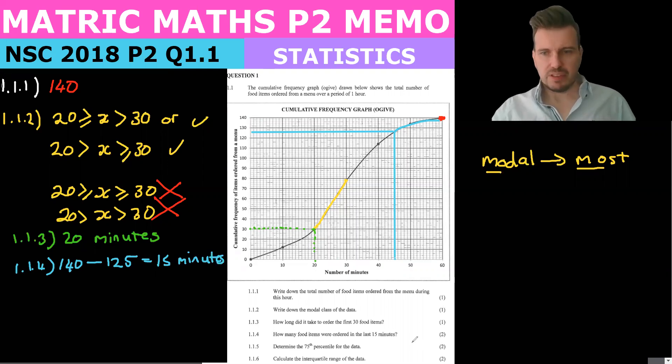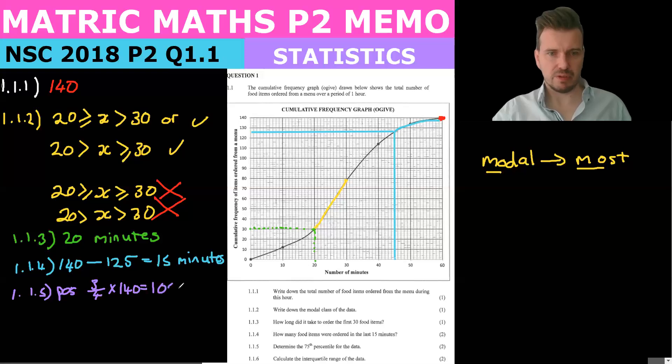The 75th percentile is also called Q3 because 3 over 4 is 0.75. So the position of the 75th percentile is going to be 3 over 4, or 0.75 times 140, which is going to give us 105 minutes. Now that tells you the position, so we look at the position at 105.